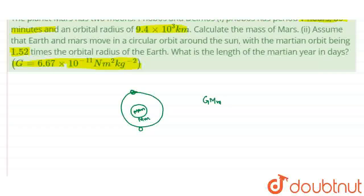The value of r2/r1 is given as 1.52 times. So I can put: t2 = (1.52)^(3/2) × t1, where t1 is 365 days (1 year). Solving this, the value of t2 comes out to be 684 days. So this is the answer to the second part: the length of the Martian year is 684 days.